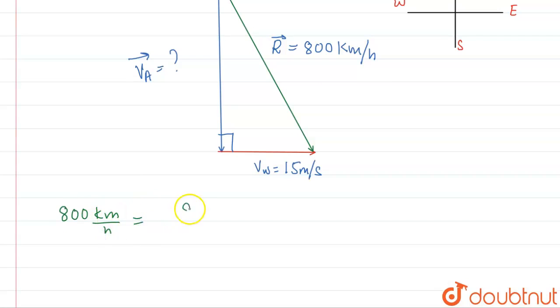So basically kilometer per hour is 800 kilometer per hour. So what we'll write? 800 kilometer per hour is 800 into basically one kilometer is what? Thousand meters. And one hour is 3600 seconds.